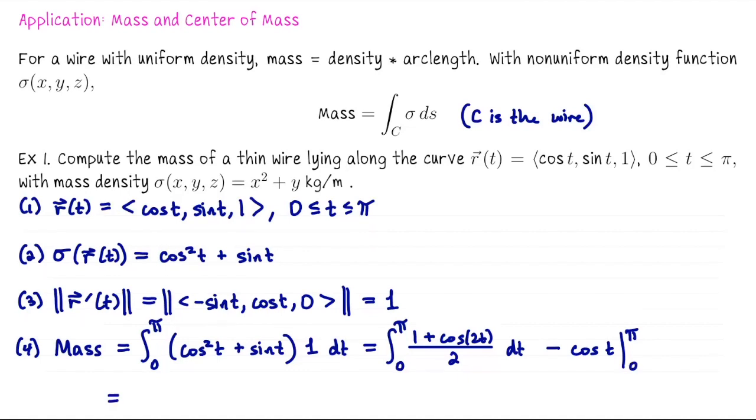Now we can keep going. The anti-derivative of 1 half would be t over 2, then plus sine 2t over 4. That's going to get evaluated at the bounds. Let me evaluate the second part. That's going to be minus and then the quantity negative 1 minus 1. The sine terms are going to be 0, so that's going to get pi over 2 plus 2.